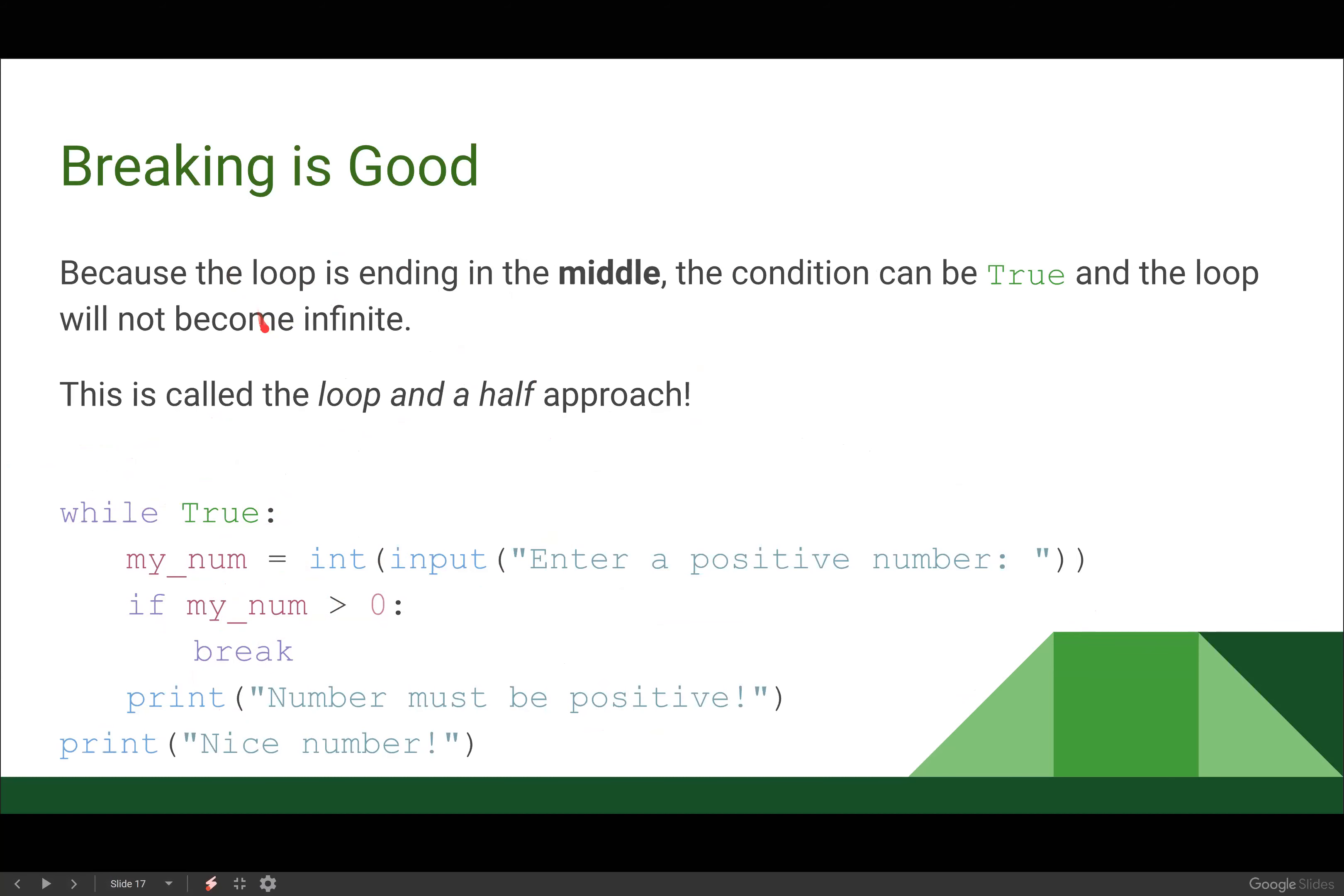So because the loop is ending in the middle of the body now, the condition can be true, and the loop won't be infinite. So the while loop will continue to loop as long as its condition evaluates the Boolean value true. So this will loop forever, except for our break in the middle. And using a while True loop with a break inside of an if statement is called the loop and a half approach,